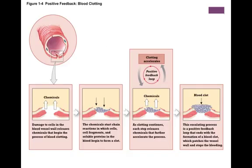Here's positive feedback of blood clotting. There's a cut in the blood vessel. It releases chemicals and a blood clot forms. The forming blood clot sends out more chemicals, which cause an even bigger blood clot until we finally get a big enough blood clot to stop the bleeding. That's positive feedback. Another example, again, is labor and delivery.